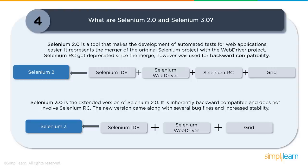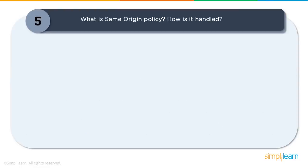Selenium 3.0 completely eliminated RC, which was already on its path of deprecation in 2.0. WebDriver replaced RC completely. The components of 3.0 are the IDE, WebDriver, and Grid. With this introduction of a full-fledged WebDriver, Selenium became the most powerful tool for web application automation.